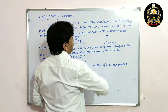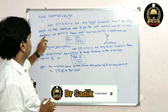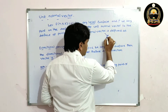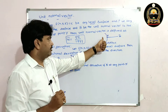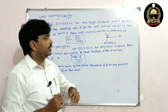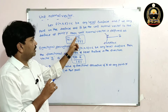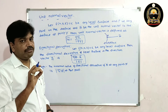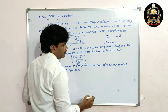Let n̄ be the unit normal vector to the surface at the point P. The unit normal vector at point P is defined as: n̄ = ∇f / |∇f|. That is del f divided by modulus del f.